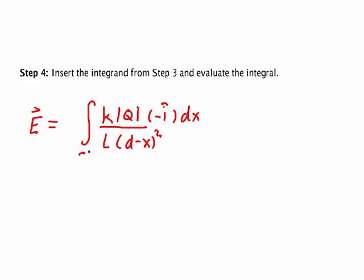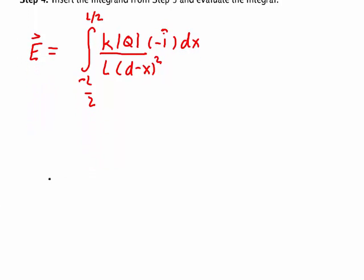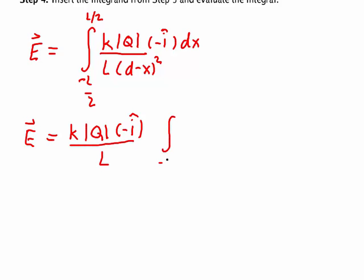So we have the integral from minus l over 2 to l over 2. Several things in this problem are constants and can be pulled outside the integral — that simplifies things considerably. We have k, the magnitude of q, minus i-hat, and l pulled out front. We have the integral from minus l over 2 to l over 2 of dx over (d minus x) squared, or equivalently, (x minus d) squared.